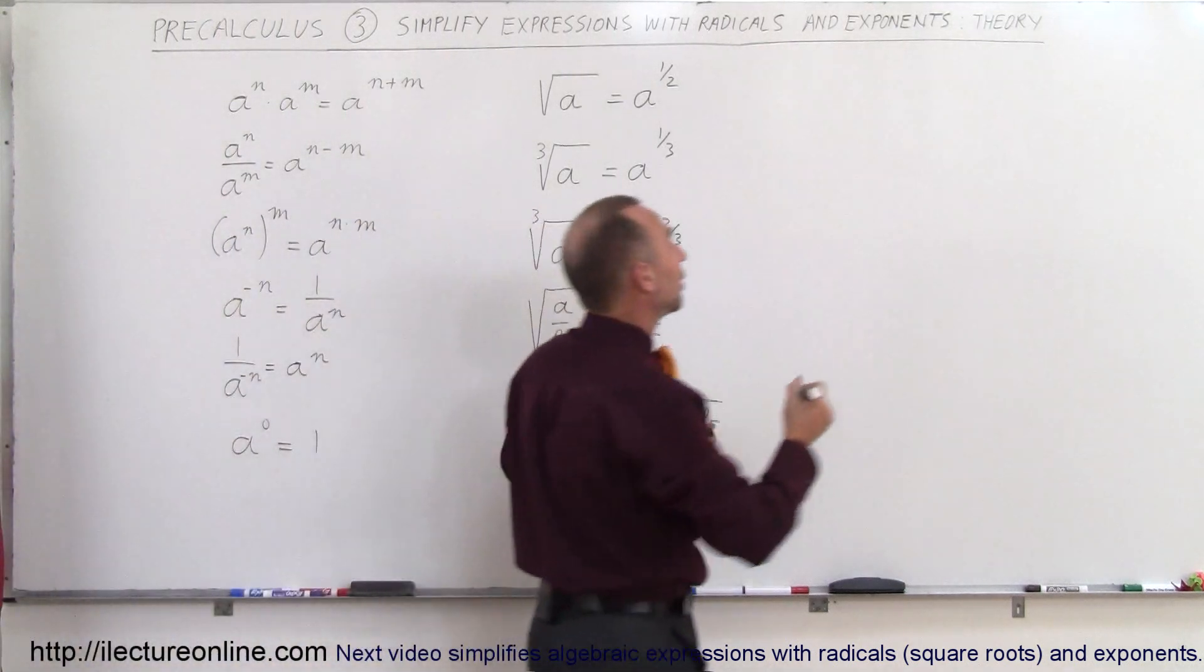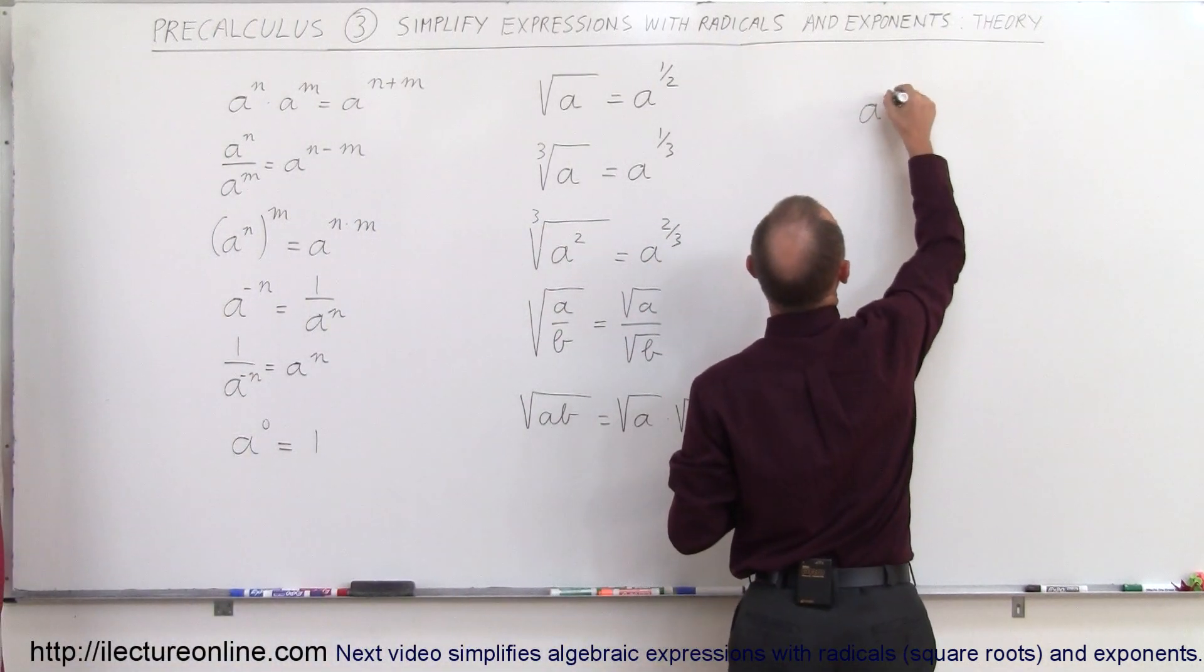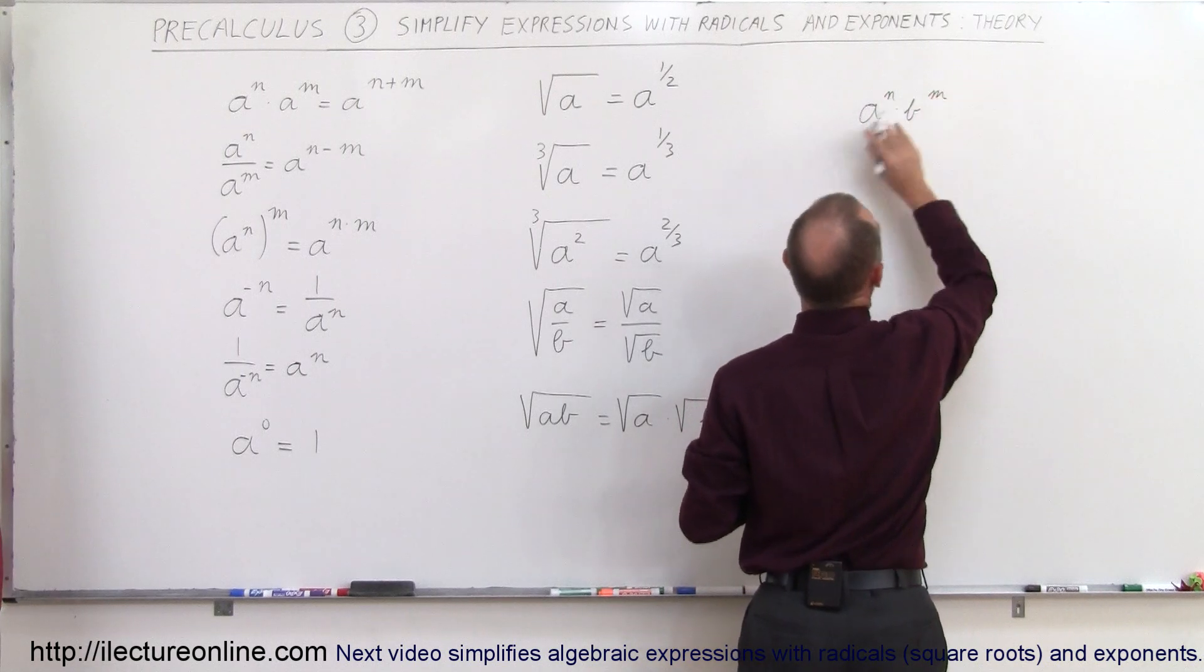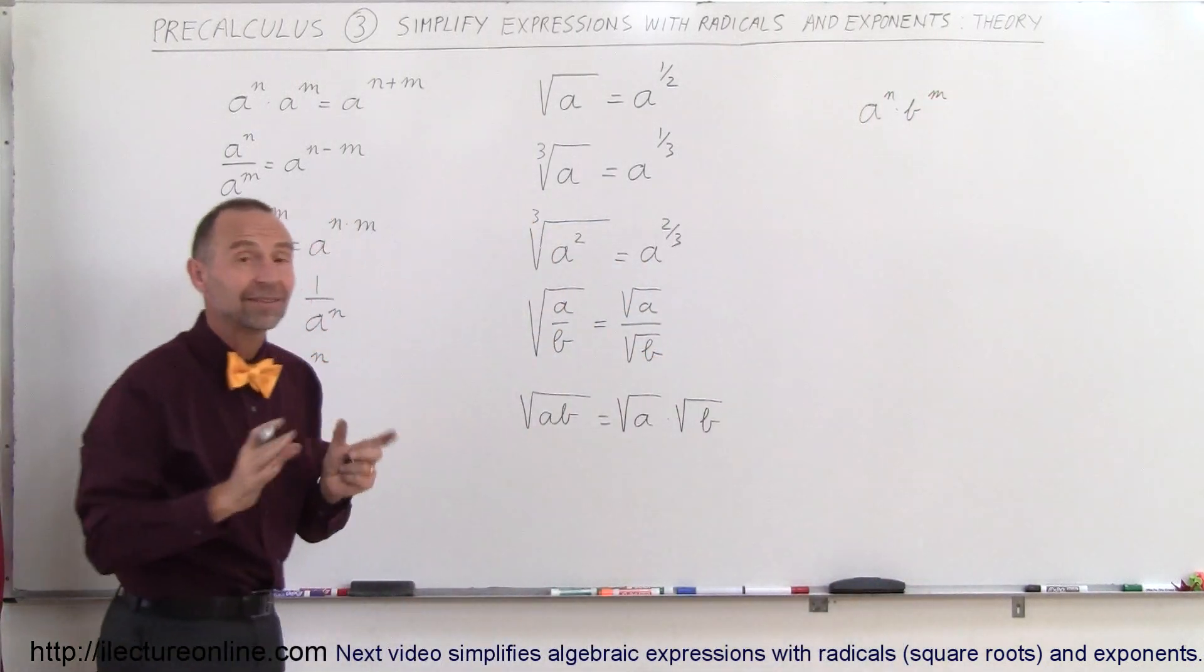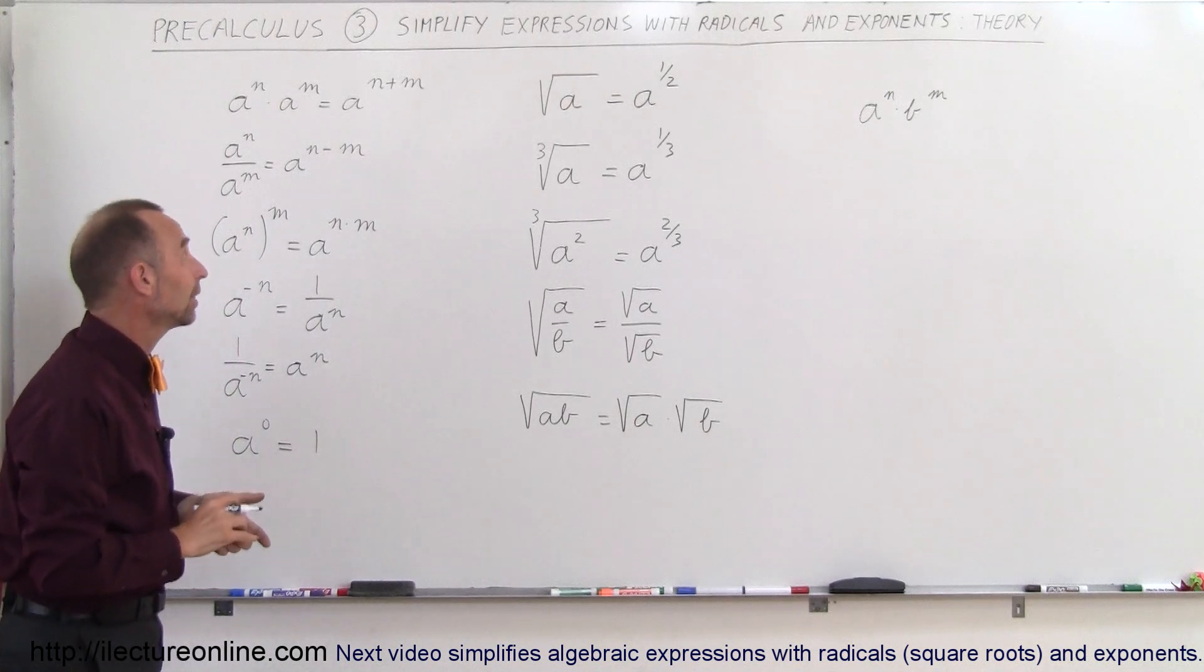For example, if we have something like A to the N times B to the M, there's no way to simplify that in any way because the bases are not the same, so you can't do anything with that.